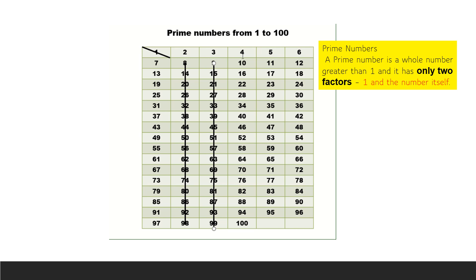Next, the fourth column. You can see all even numbers in this fourth column. Cross out all the even numbers, because even numbers have more than 2 factors and are therefore not prime numbers.